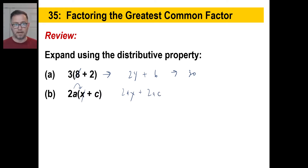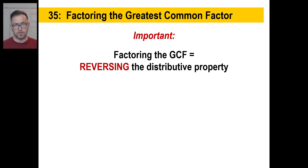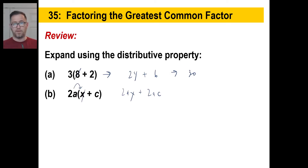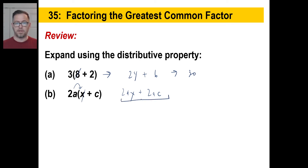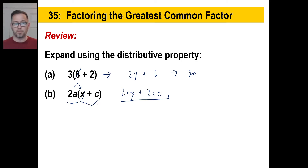What we're going to do next is go backwards from the distributive property. Factoring the greatest common factor is like reversing the distributive property. Instead of multiplying through with 2a, we're going to see an expression, find the GCF, factor it out, and then write in parentheses what's left after pulling it out of each term.